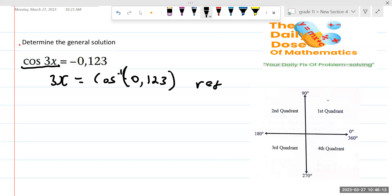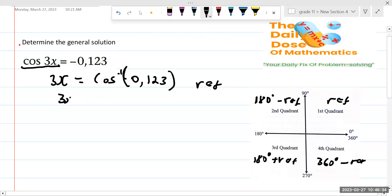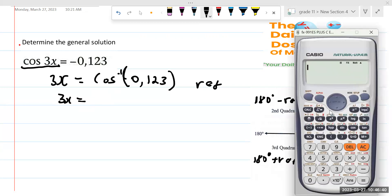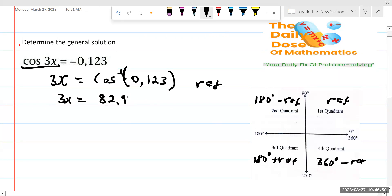So you're going to get your reference angle. And then we said here, on the first quadrant, you take the reference angle. On the second quadrant, you're going to have 180 degrees minus ref. And then on the third quadrant, you have 180 degrees plus ref. And then here you have 360 degrees minus the ref. So it says that 3x is going to be equaling to 82. So we say shift and then we get 0.123. And then it says we have 82.96.